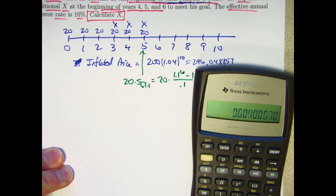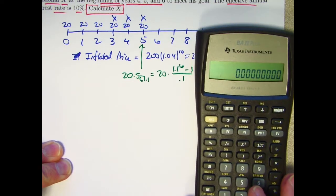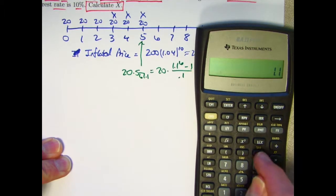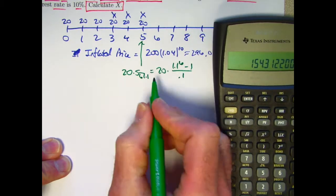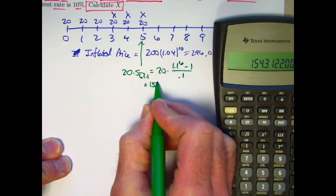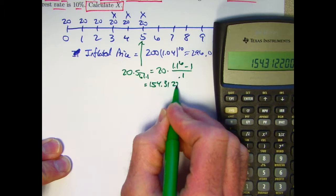Let's see what that is. 1.1 to the 6th power minus 1 divide by 0.1 times 20. We get a future value of 154.3122.